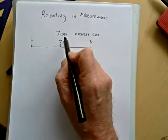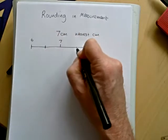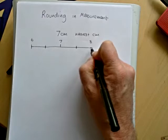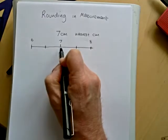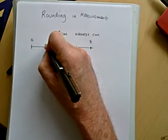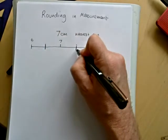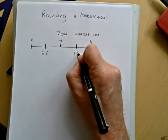Because all we know is it's 7 to the nearest centimeter. So your cut-off points are the halfway points between the next centimeter above 7, which is 8, and the next centimeter below 7, which is 6. So we could have been anywhere between 6.5 and 7.5.